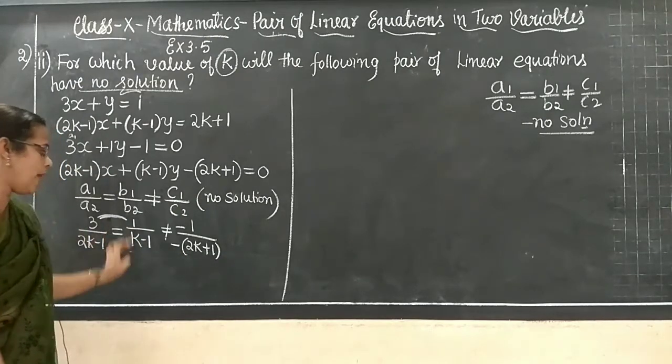Now use cross multiplication. For that, write the coefficients in order: x, y, constant, then repeat the x and y columns. The setup uses the coefficients: for y and constant, write 5, −9 and 2, −4. For x and y, write 8, 5 and 3, 2. Cross multiply accordingly.